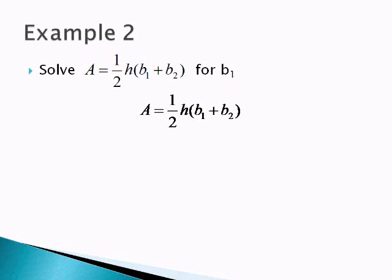And we found out last week that if there was a fraction, I can get rid of that fraction by multiplying by the least common denominator. So we're going to multiply by 2, and the 2 is going to cancel on the right side. And now I have 2A equals H times B1 plus B2.